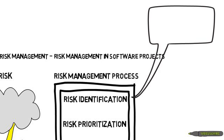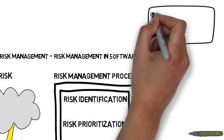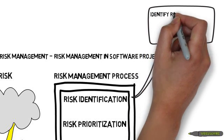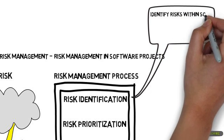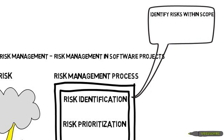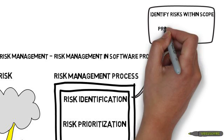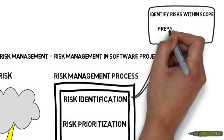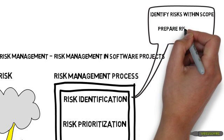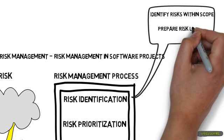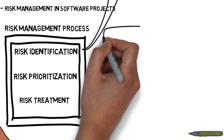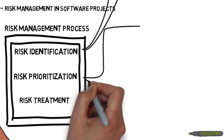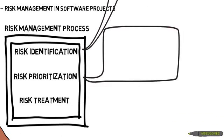In risk identification, risks are identified within the scope of the project. Risks can be identified using a number of resources like project objectives and risk lists from previous projects. For example, if certain areas of the system are unstable and those areas are being developed further in the current project, it should be listed as a risk.